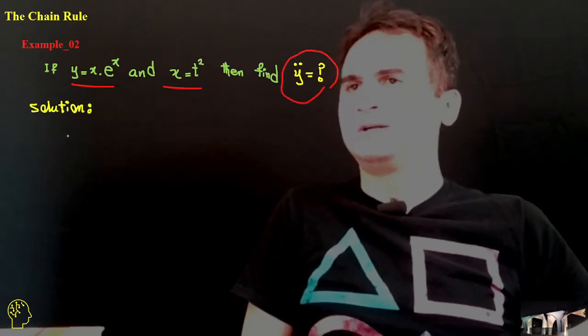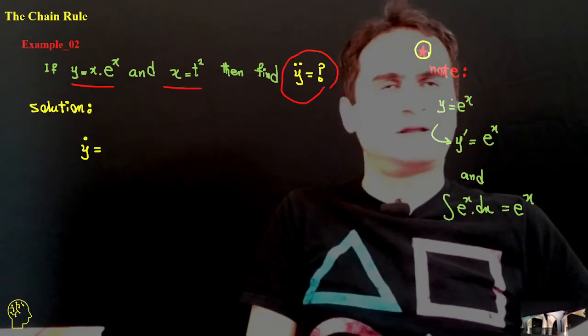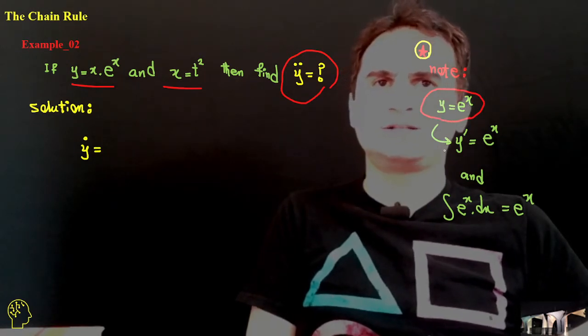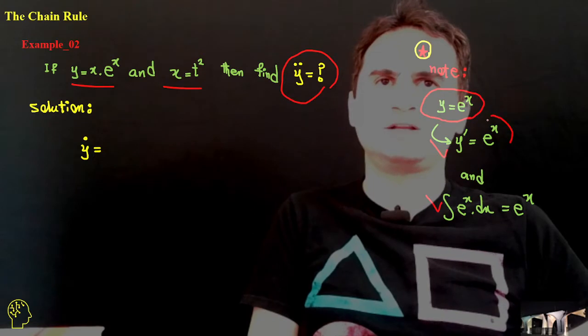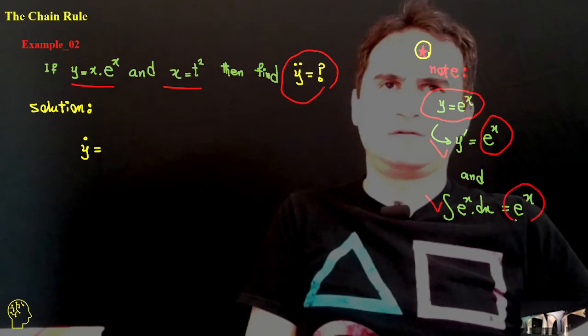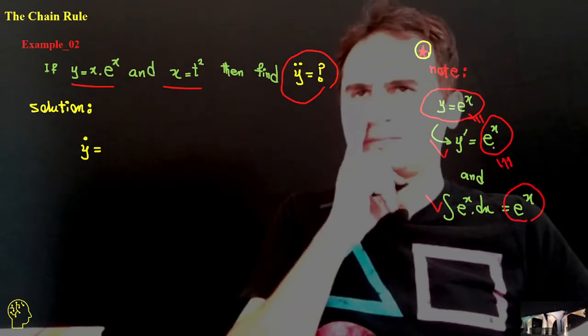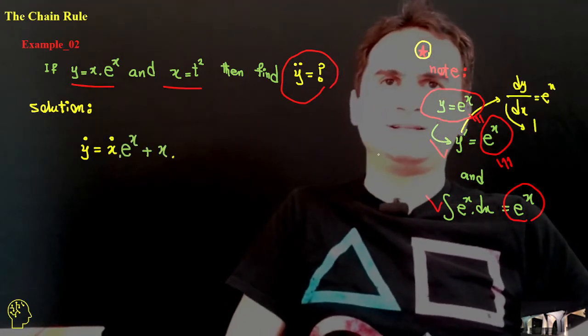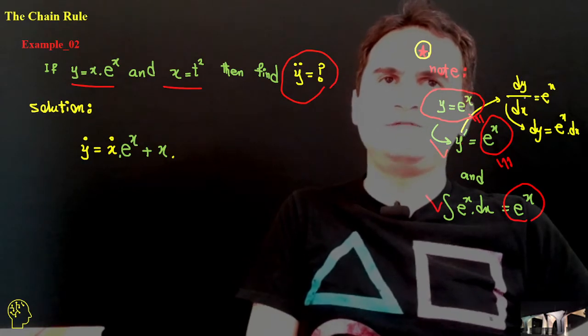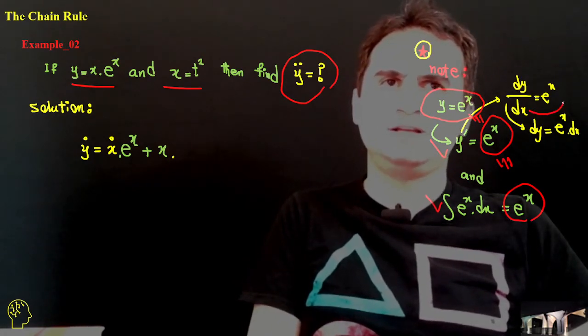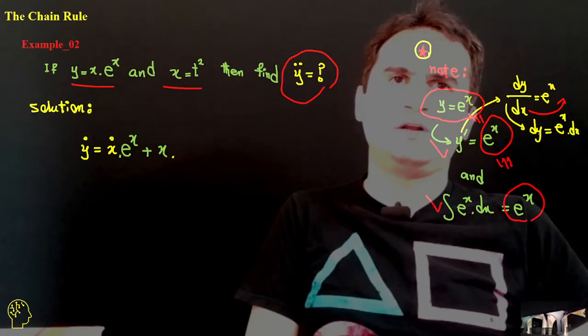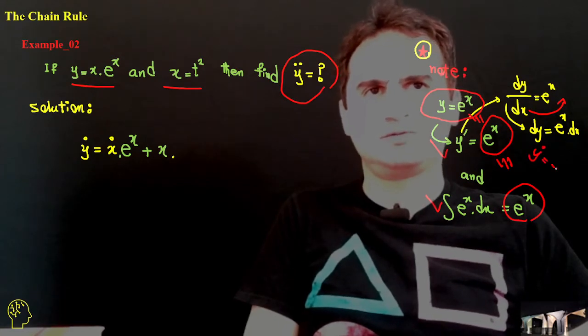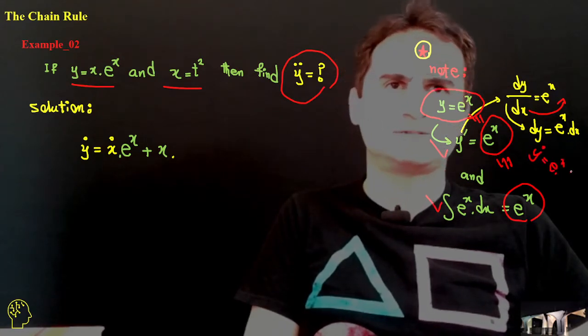So let's solve the problem. First thing to know is if we have a function like y equals e to the x, the derivation and integration of that function is like the same function, they are identical to each other, like the original function. So y dot is, and at the same time y dot is dy over dx, so if we just take dx over here, you can write down dy like e to the x dx, and that's y dot. Y dot is equal to e to the x times x dot.